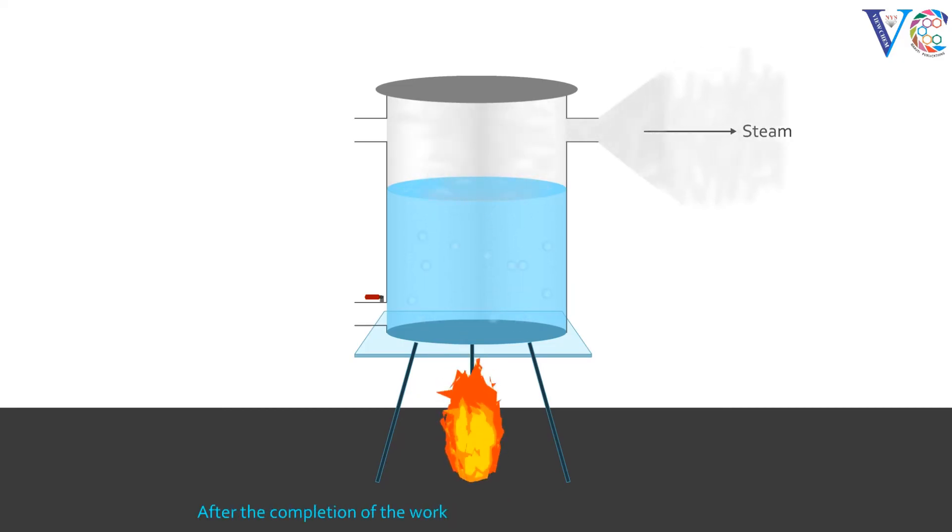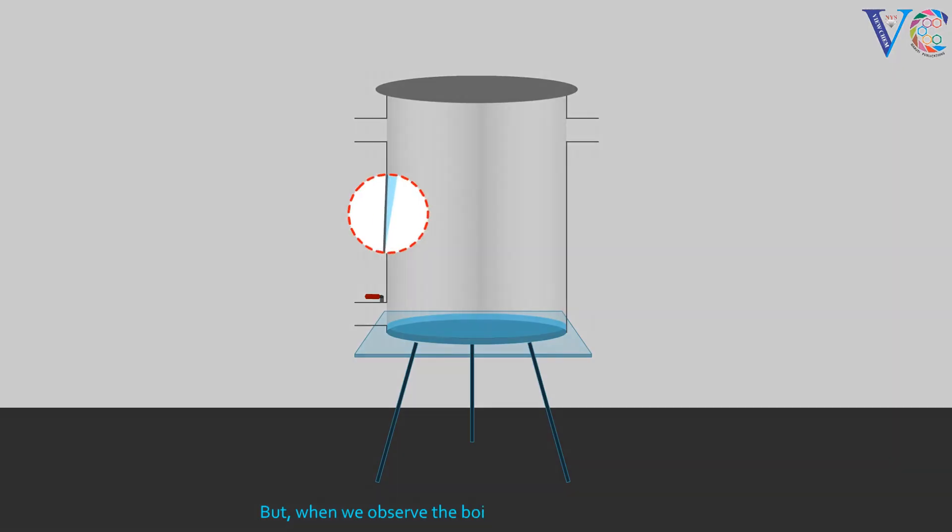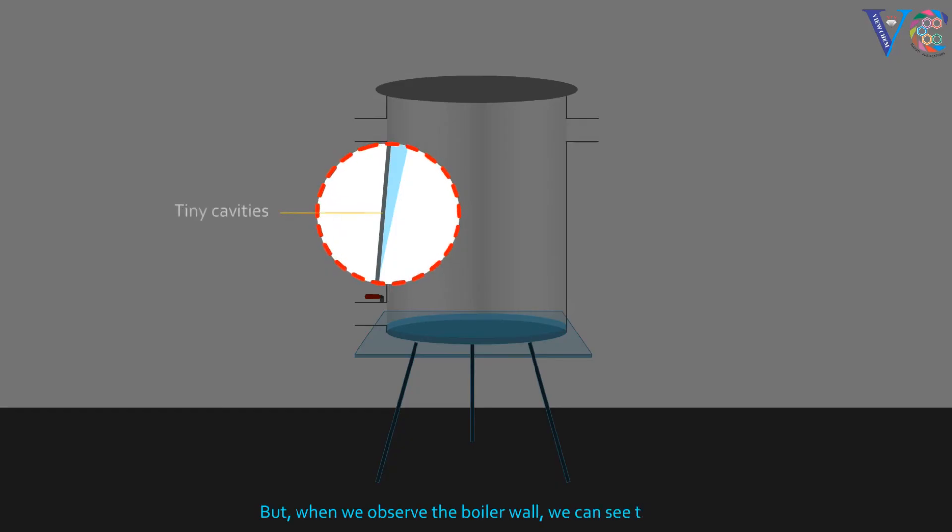After the completion of the work, fire is extinguished. Hot water is drained off. But when we observe the boiler wall, we can see tiny cavities.